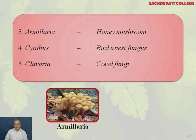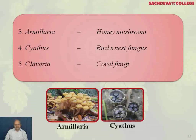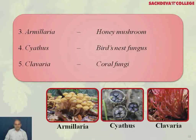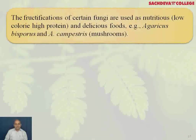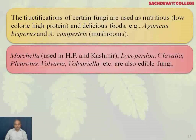The fructifications of certain fungi are used as nutritious, low-calorie, high-protein food. Examples include Agaricus bisporus and Agaricus campestris, commonly known as mushrooms; Morchella, used in Himachal Pradesh and Kashmir; Lycopernon, Clavaria, Pleurotus, Volvaria, and Volvariella, which are also edible fungi.